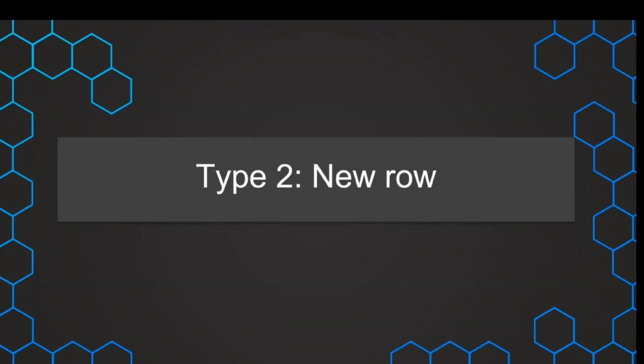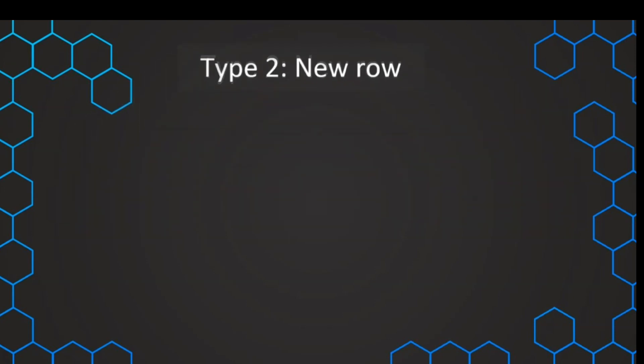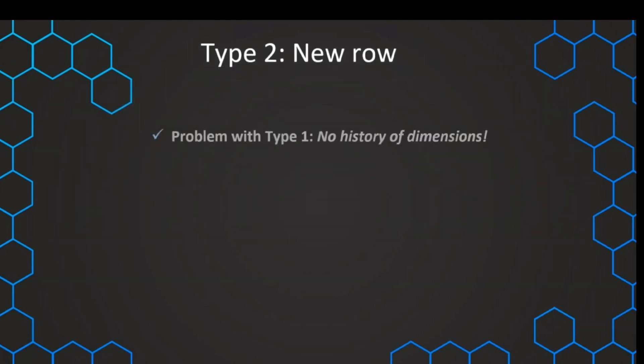Now let's continue with probably the most powerful slowly changing dimension, and this is Type 2. We've seen that the Type 1 slowly changing dimension had the problem that there's no history in our dimension. That means that once we make a change, only the current state of the dimension is reflected in our table, and all of the previous states have not been tracked and are not available anymore.